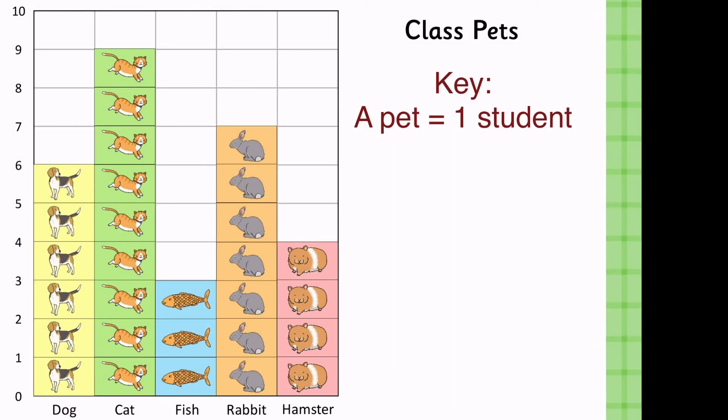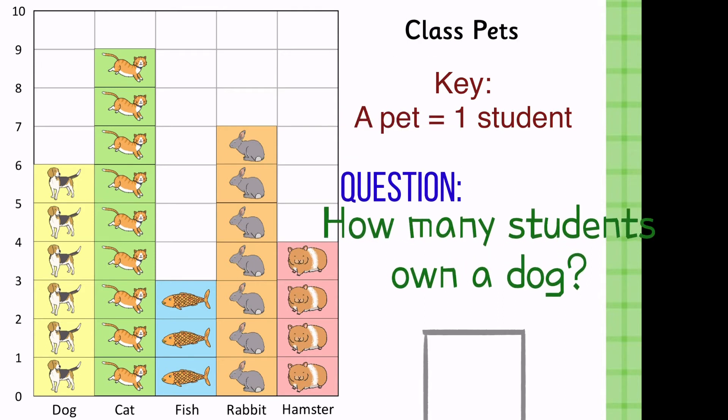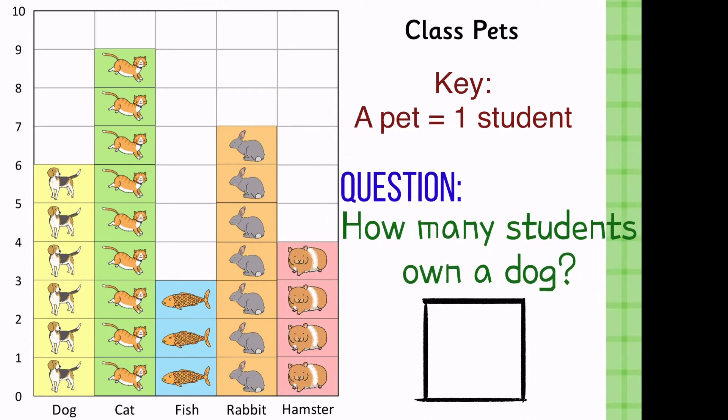All eyes on this picture graph. The title is all about class pets and the key says, a pet is equal to 1 student, which means we're going to count by 1's. Count as it is. Question number 1. How many students own a dog? Everybody, let's focus on the dog data and let's start counting. The correct answer is 6.